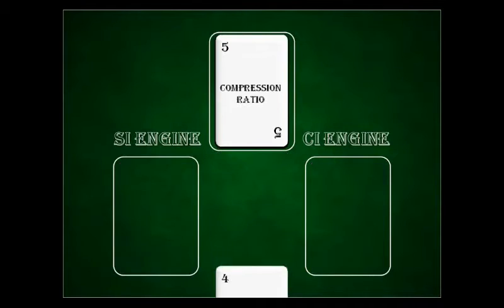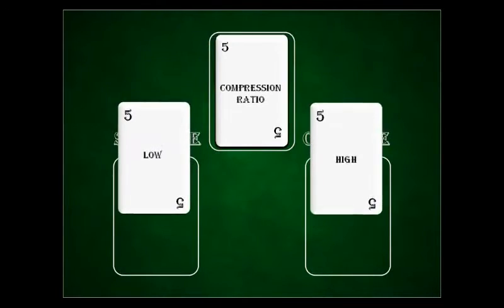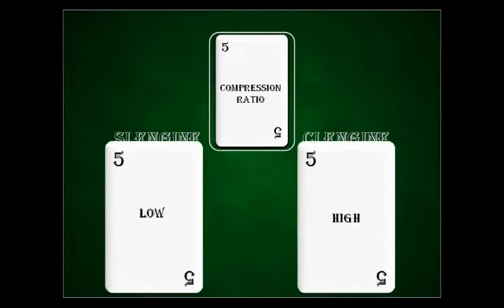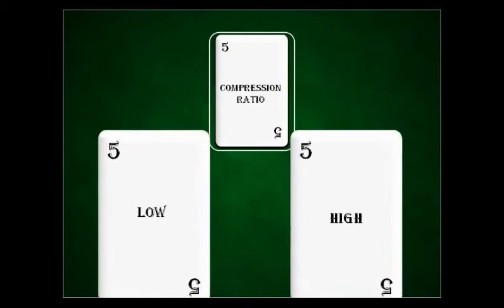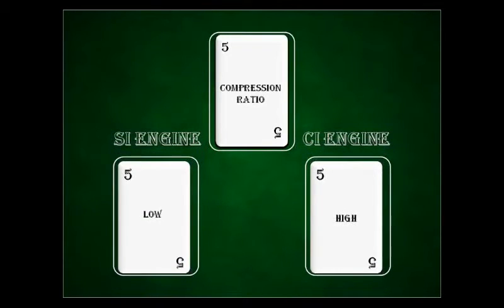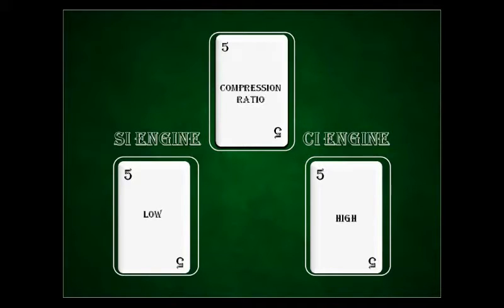Next is compression ratio. In SI engines, the compression ratio is in the range of 6 to 10, depending on the size of the engine and the power to be generated. In CI engines, the compression ratio for air is 16 to 20. This high compression ratio creates high temperature, which ensures the diesel fuel can self-ignite.